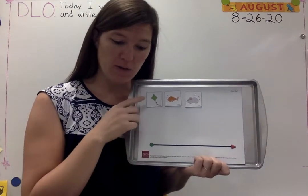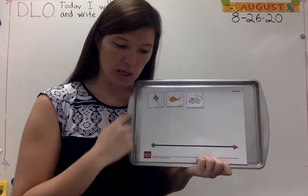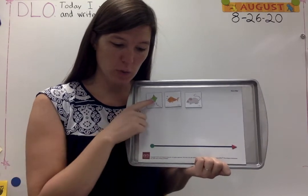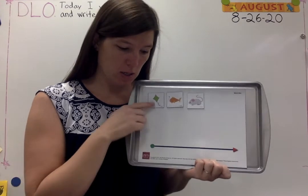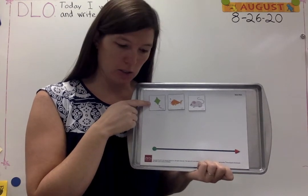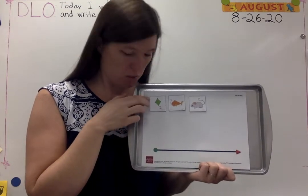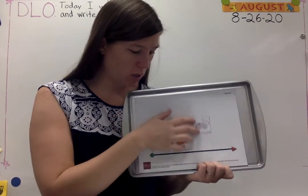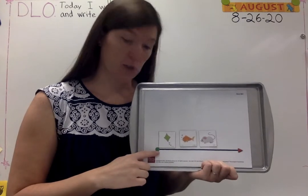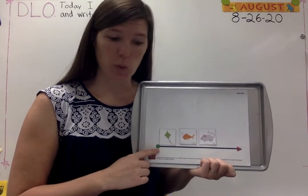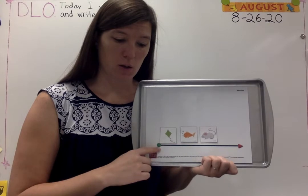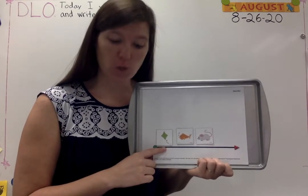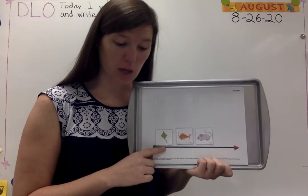I'm going to put my finger by the green dot and slide it along the line towards the red arrow. First word I come to is kite. So let's say them as I pull them down. Kite, fish, mouse. I start at the green dot because we always start on the left when we read. The first word I come to is kite. Kite is the first word. It's at the beginning of the line.